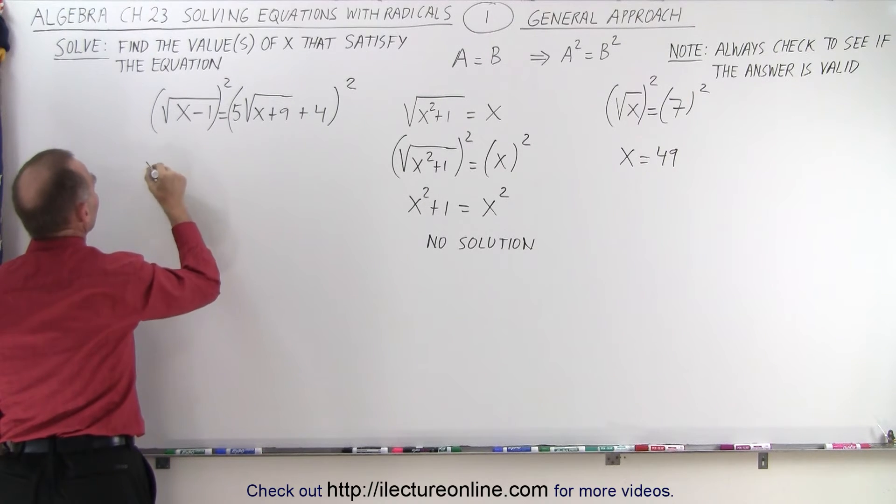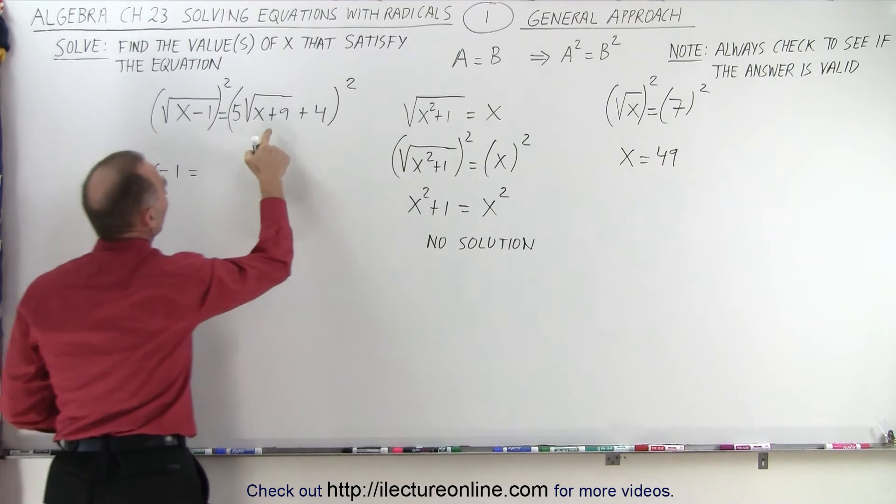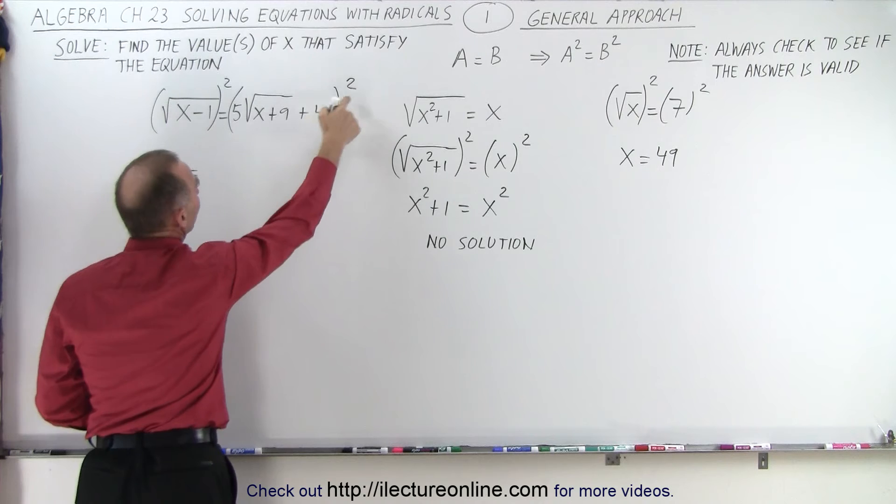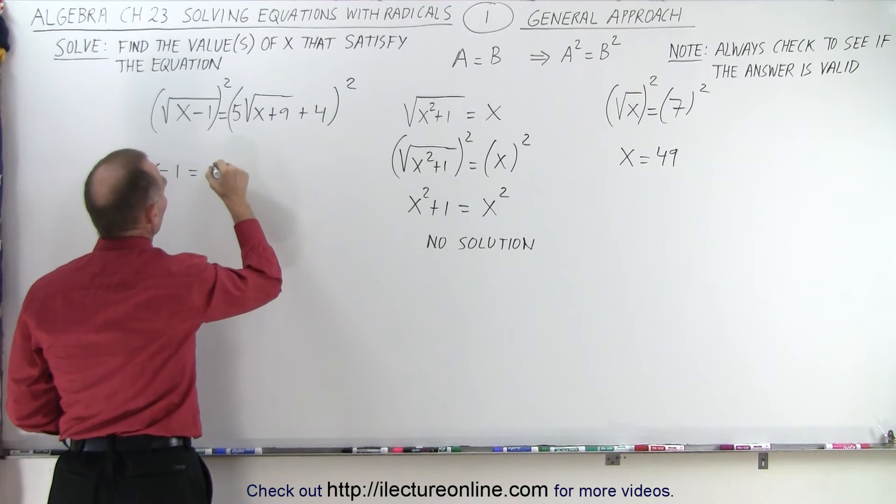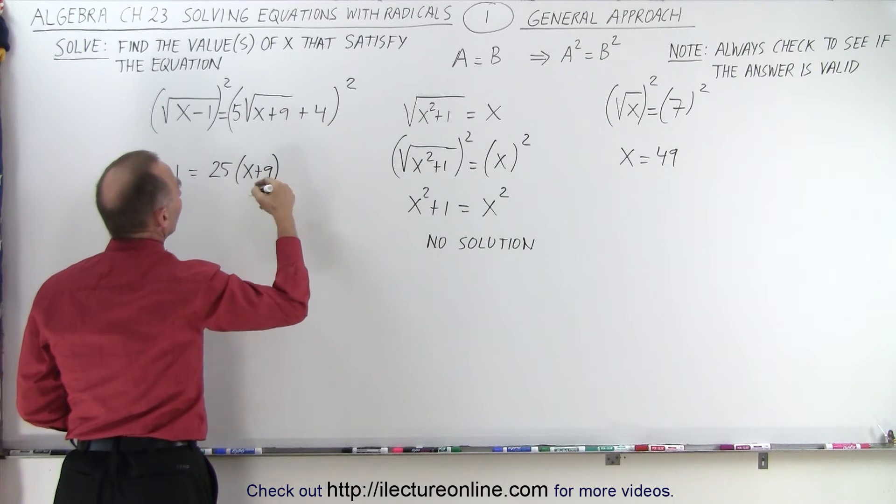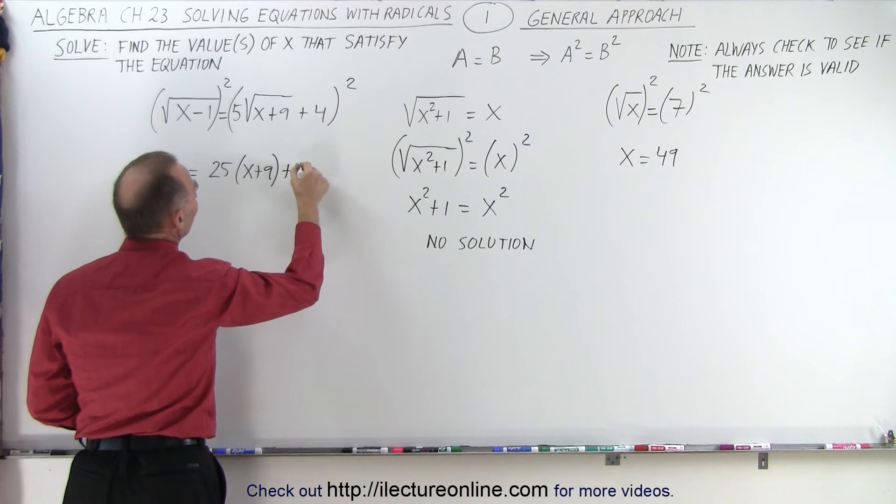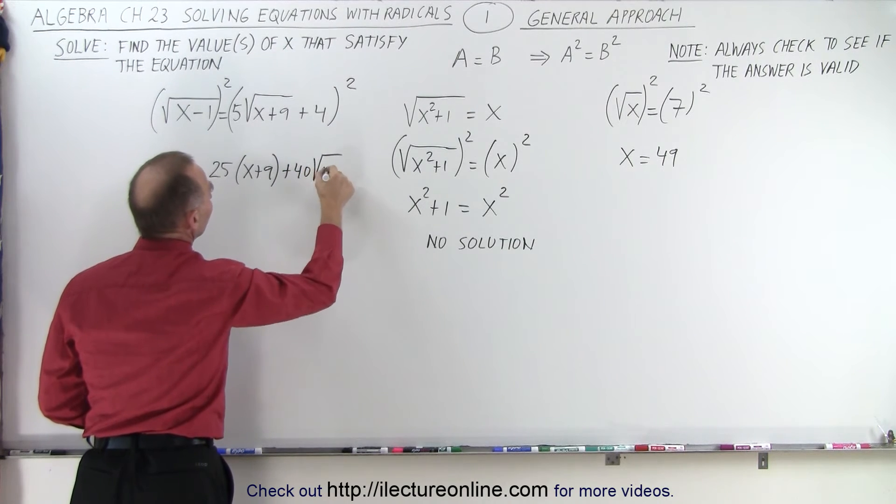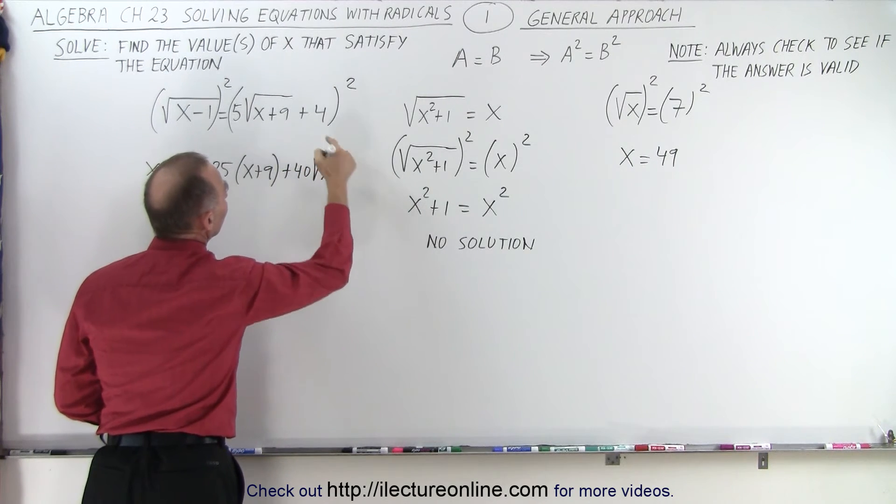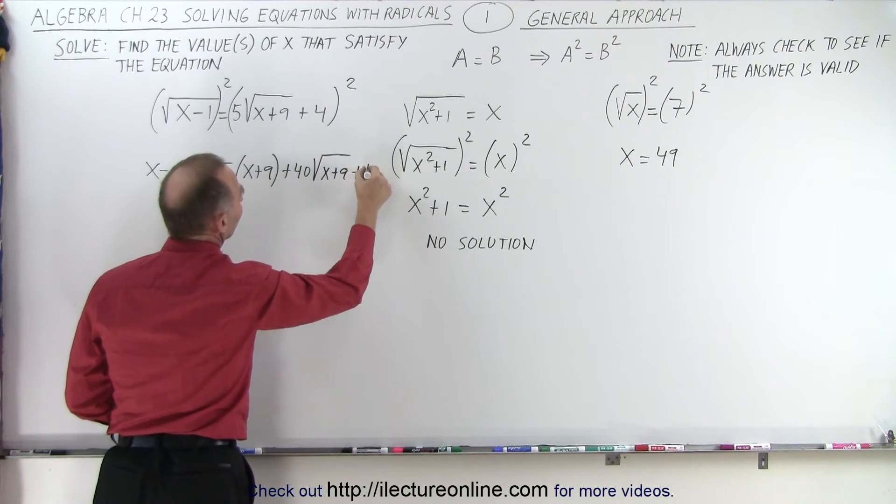On the left side, we end up with x - 1 equals, on the right side, we have a binomial squared. The first term squared is 25(x + 9), plus twice the product of the two: 5 times 4 is 20, times 2, that's 40 times the square root of (x + 9), plus 16.